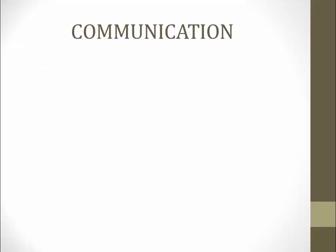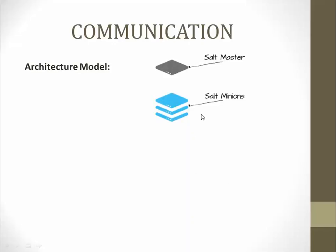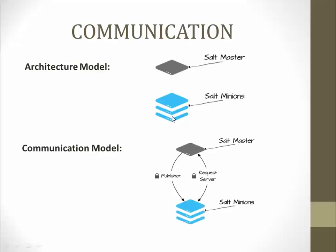Here is the architectural model of communication. We have a salt master and salt minions — one server acts as the master and the others act as minions. Salt communicates via a publisher which publishes executable commands to the master. The minion then sends a request back indicating whether deployment was successful or if there were any failures.